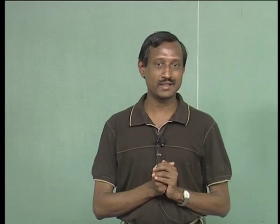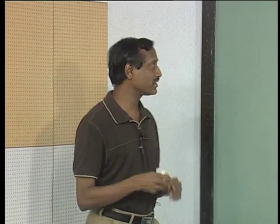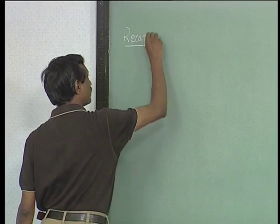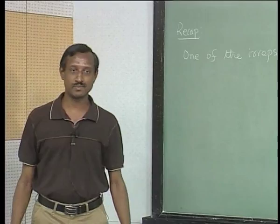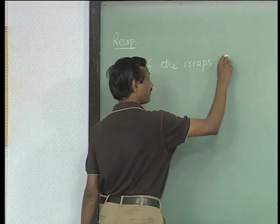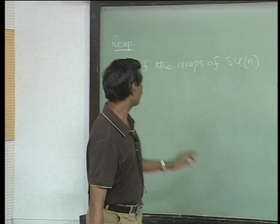I am going to continue from the previous lecture, but let me quickly recap some things. One of the natural representations of SU(N) that we saw was what we called the fundamental or the defining representation. That was how I originally defined SU(N) in the early part of the course - take n by n matrices satisfying U U-dagger equal to identity with determinant equal to 1.